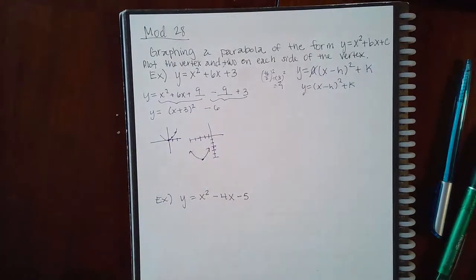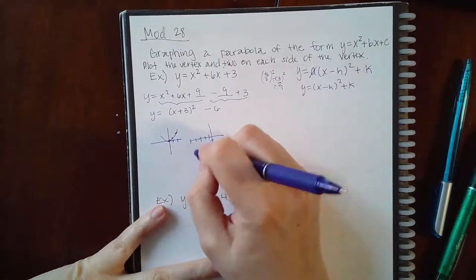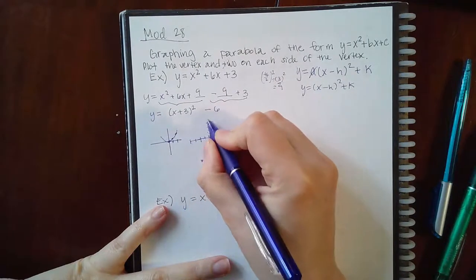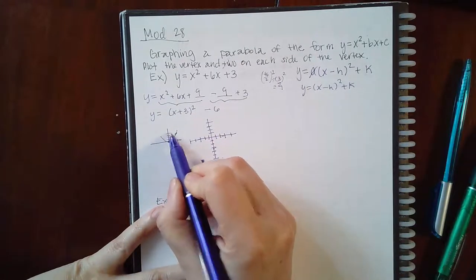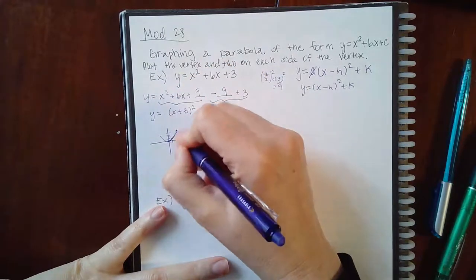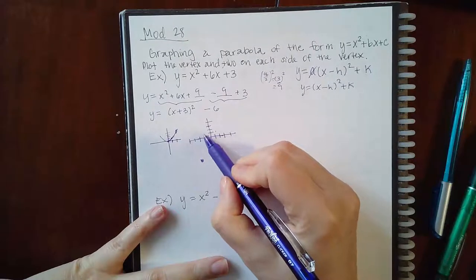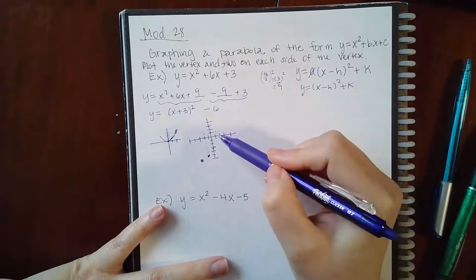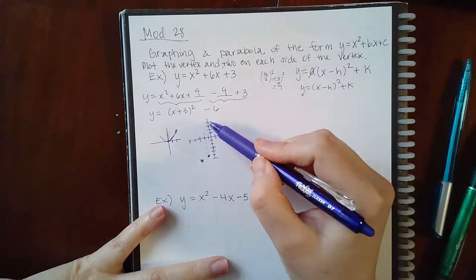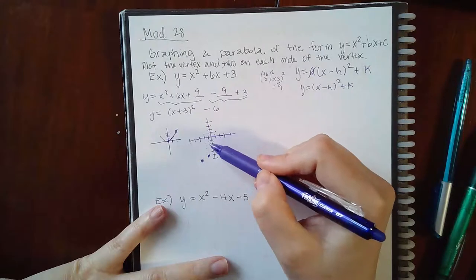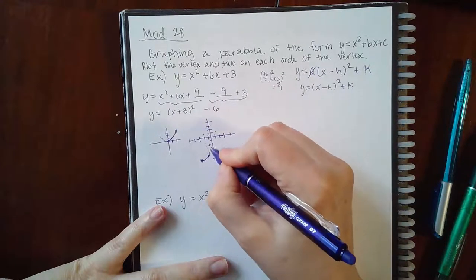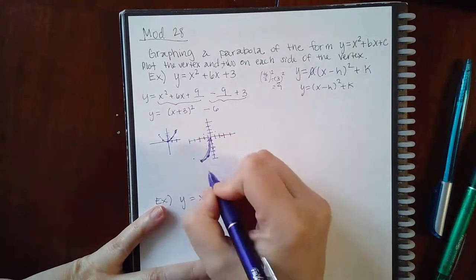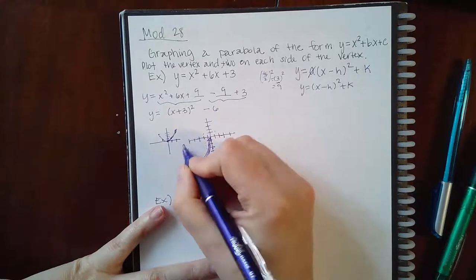You can find the other points by shifting the standard parabola points. Take the point (1, 1): go left three and down six. Take the point (2, 4): go left three and down six. You do the same for (-1, 1) and (-2, 4) to get the points on the other side of the vertex.